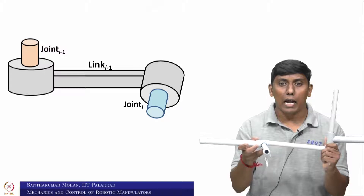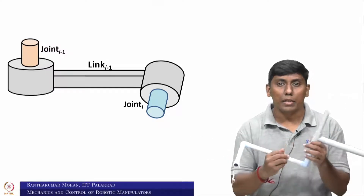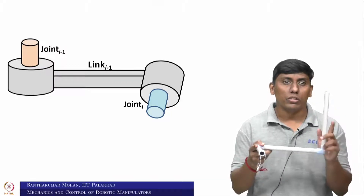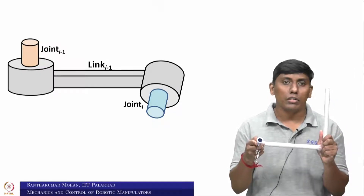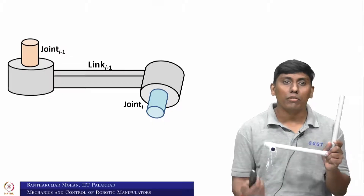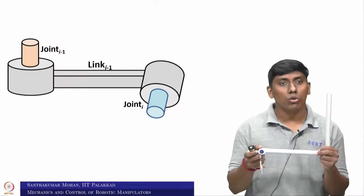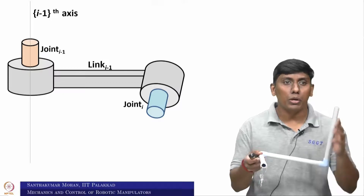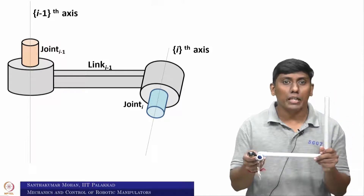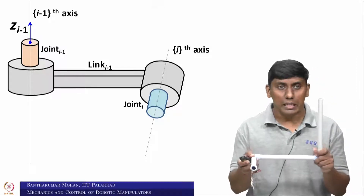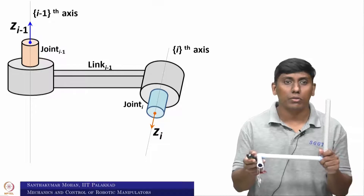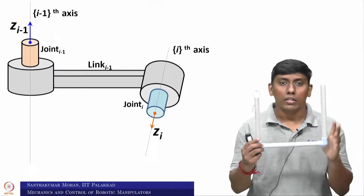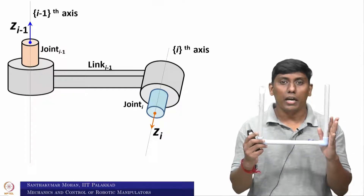Now if you take the random link i minus 1, you can see it would be having two joint axes — one is pointing out, which we call joint i minus 1, and the other is joint i. As per the Denavit-Hartenberg approach, these two joints are supposed to be fixed in axes. These can be rotary or translational joints, but these two axes are supposed to be fixed with z — so z_{i-1} and z_i would come. This link i minus 1 gives the relative information of joint i and joint i minus 1.